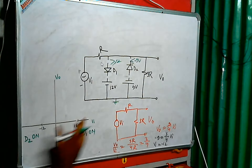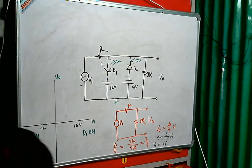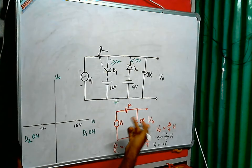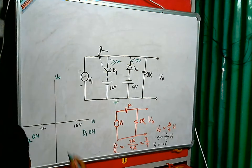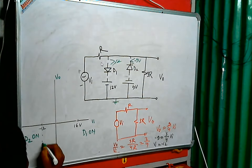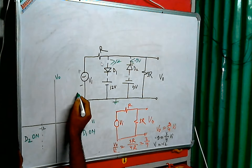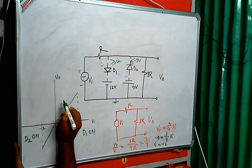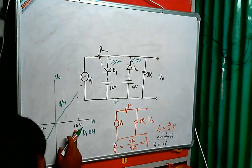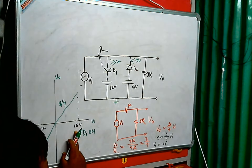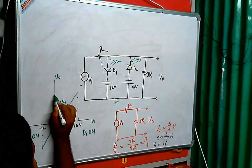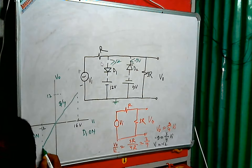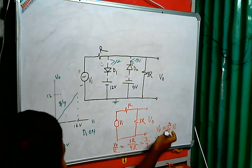In between these two critical voltages, both diodes are off, and we have only the voltage divider circuit. The input-output characteristic is simply a linear characteristic with a slope of 3 by 4. So when the input voltage is 16 volts, the output voltage will be 12 volts, and when the input voltage is minus 12 volts, the output voltage will be minus 9 volts.